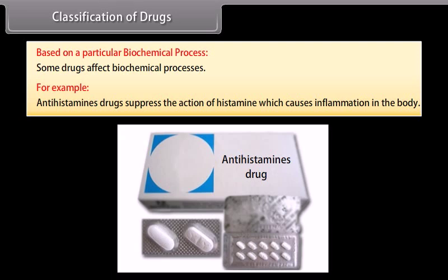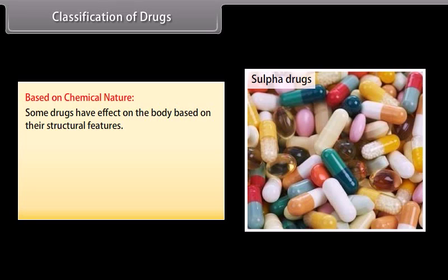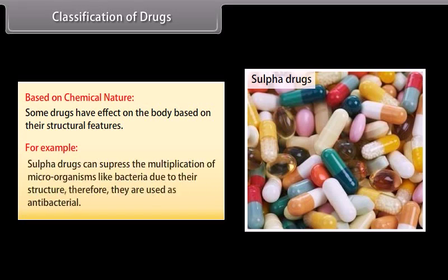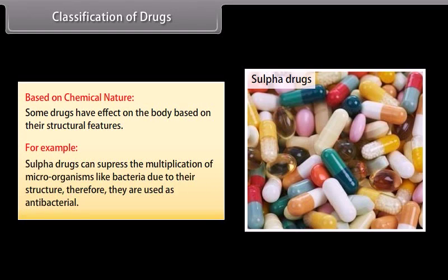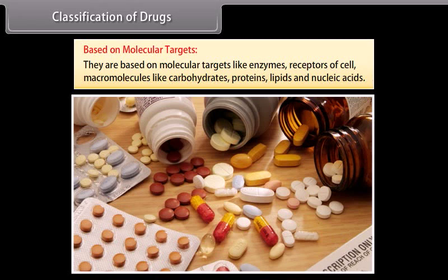Antihistamine drugs suppress the action of histamine, which causes inflammation in the body. Based on chemical nature, some drugs have effects on the body based on their structural features. For example, sulphur drugs can suppress the multiplication of microorganisms like bacteria due to their structure, and are therefore used as antibacterials. Drugs can also be classified based on molecular targets such as enzymes, receptors, and macromolecules like carbohydrates, proteins, lipids, and nucleic acids.